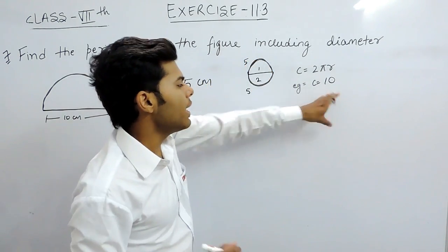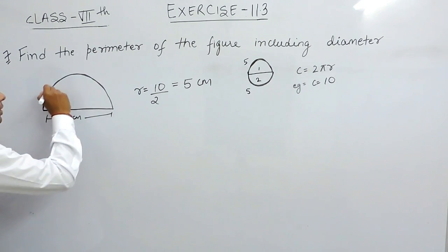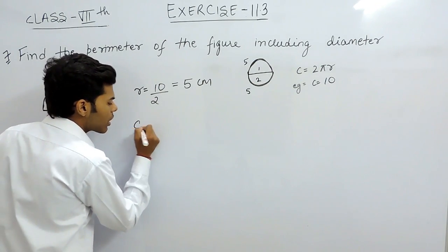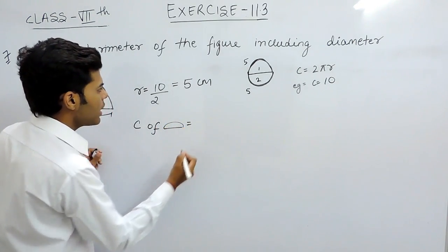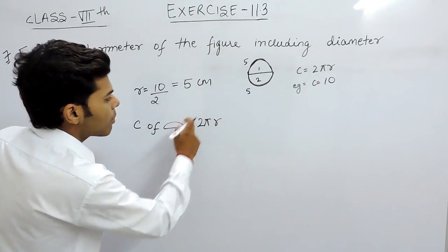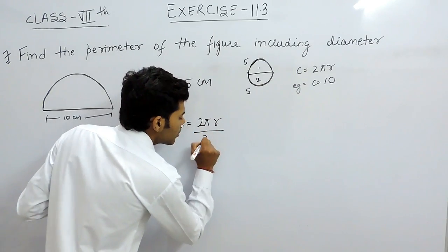That's why the total will be 10. So first of all, we will divide this and after that we will add this diameter to it. So circumference of this semicircle will be equal to 2πr, that is a complete circle, and because it is a semicircle, so by 2.